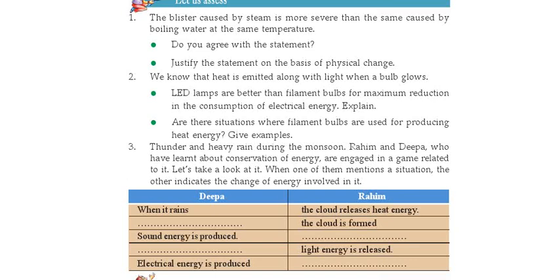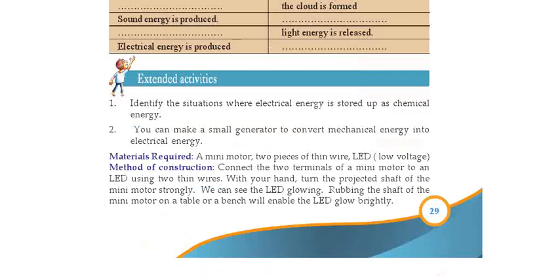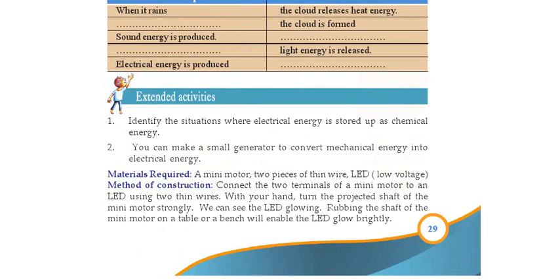Sound energy is produced — that is the thunder. When lightning occurs, light energy is released. When electrical energy is produced during lightning, these are the forms of energy involved.